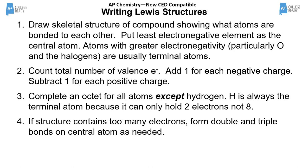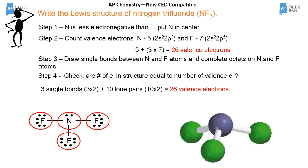Step by step: the least electronegative atom — nitrogen in this case — goes in the middle. Count total valence electrons, hook everything together with single bonds, throw extra electrons on exterior atoms like fluorines, and then any leftover goes on the central atom. It's worth noting that some elements can have more than eight electrons — an expanded octet.